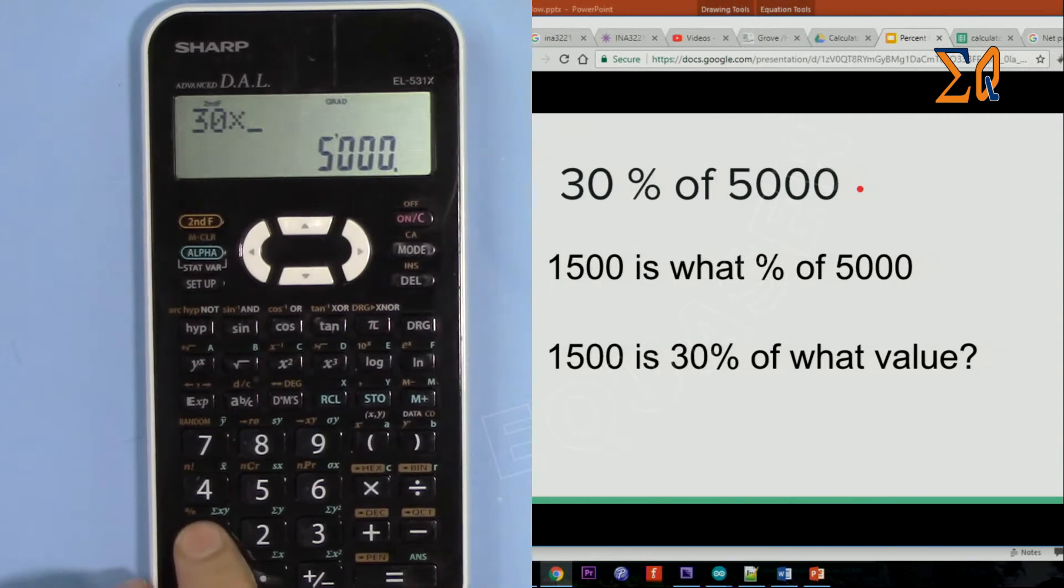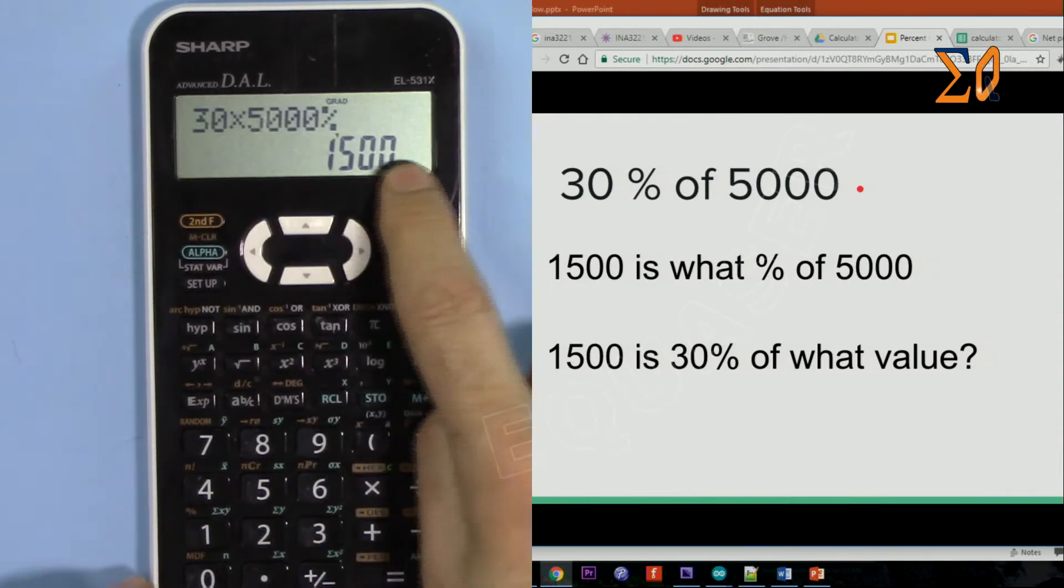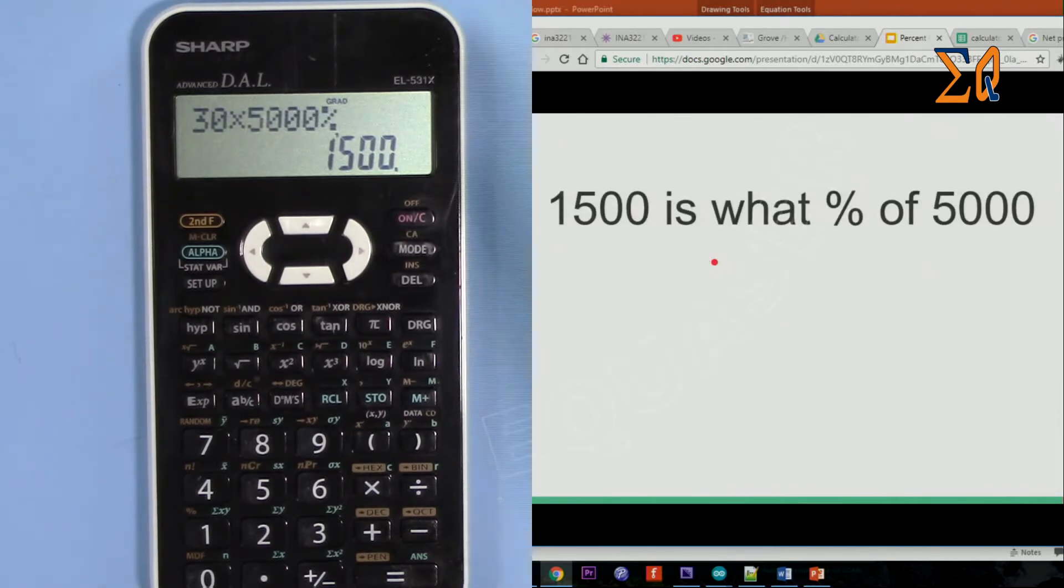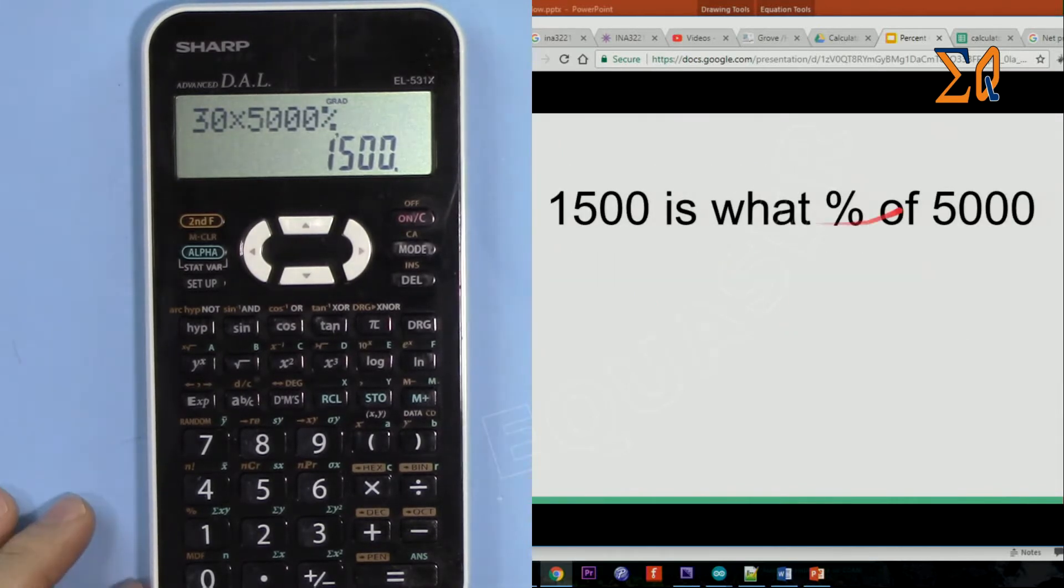So that is 1500, we already have the answer. But let's see how we can find out, for example, 1500 is what percent of 5000? We know it's 30, but let's see how we can do it with the calculator.